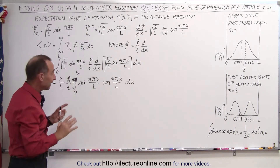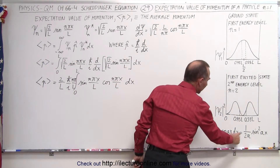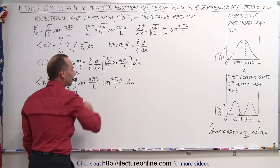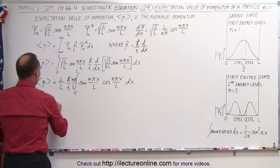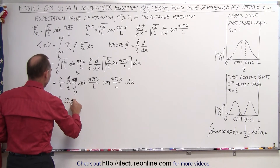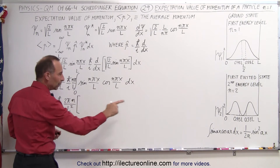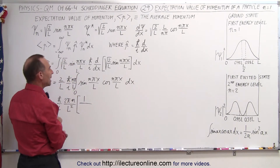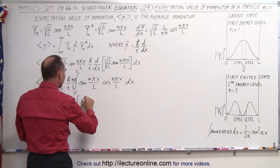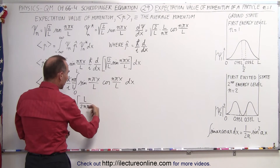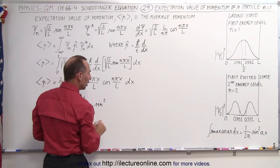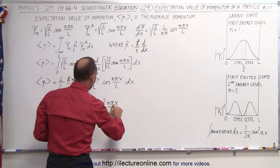Now we need to integrate this. The integral of sine times cosine is 1 over 2a times the sine squared of ax, where a is n pi over L, which is the constant in front of x. So this becomes h-bar over i, then 2 pi n over L squared, and when we integrate we get 1 over 2a. Since a is n pi over L, that is 2n pi over L, so we can put l in the numerator, giving us the sine squared of n pi x over L, evaluated from 0 to L.